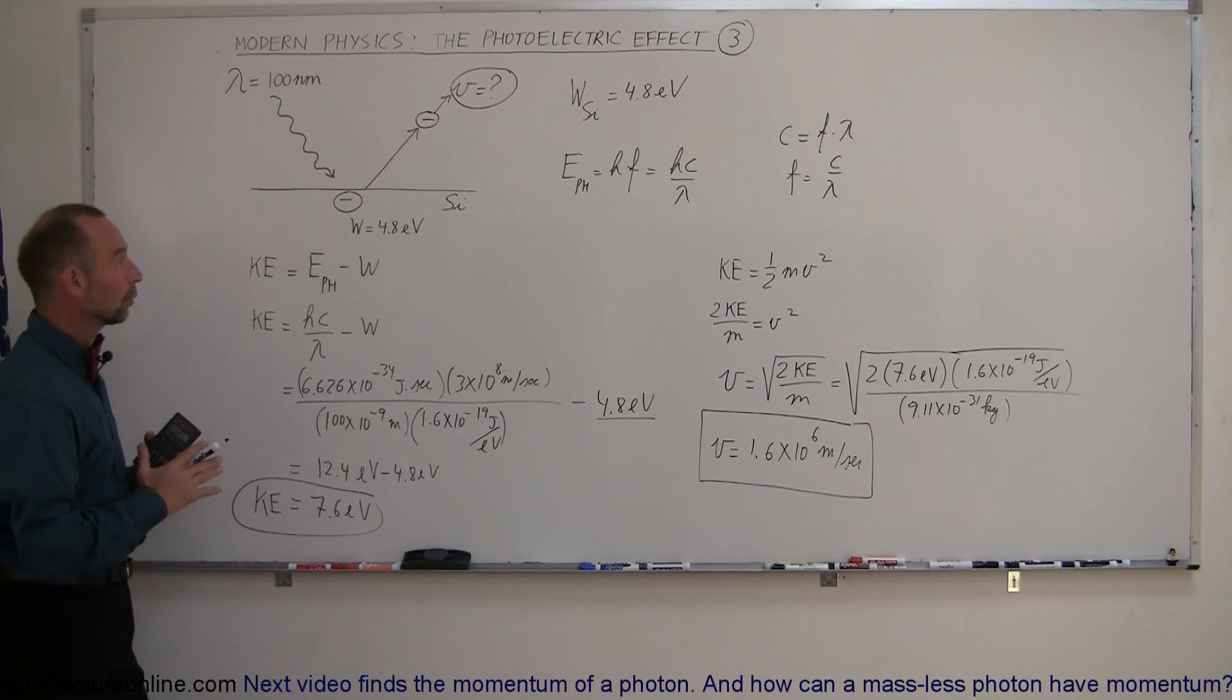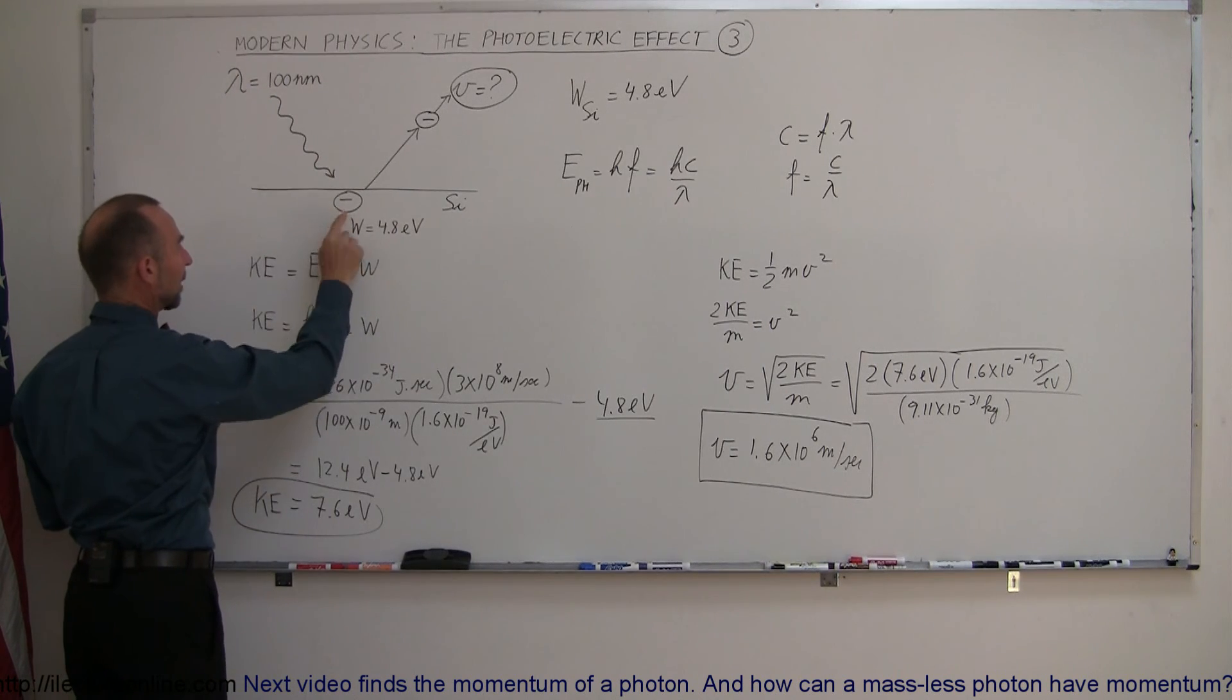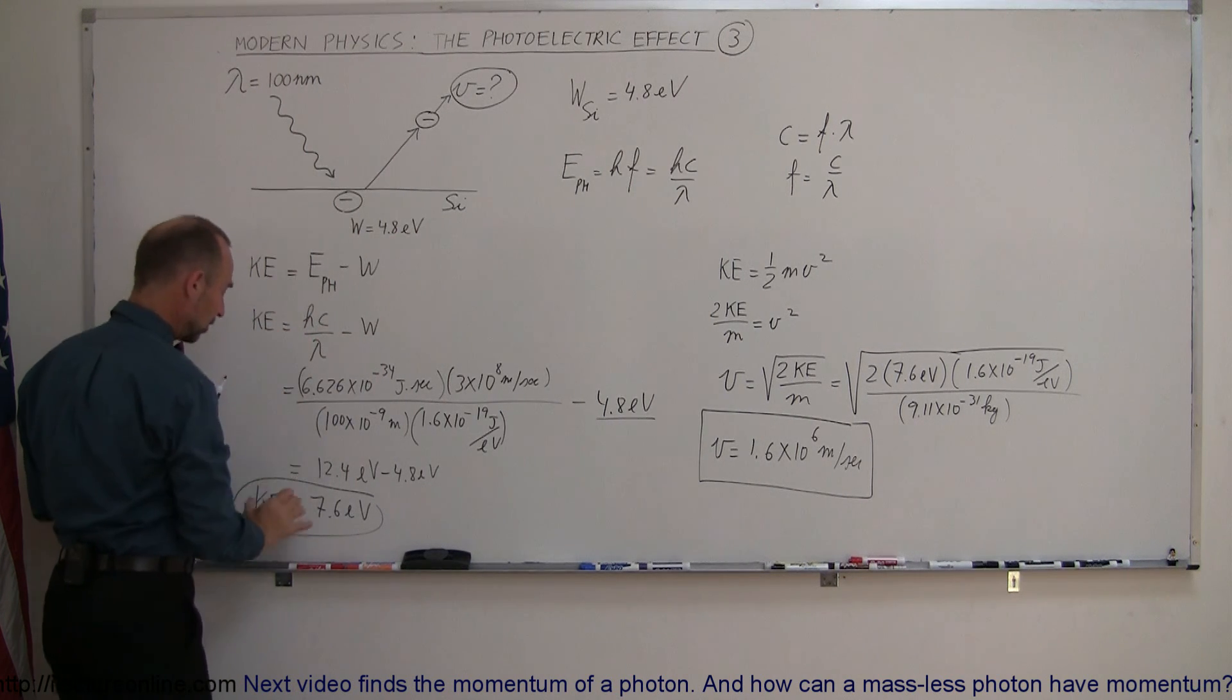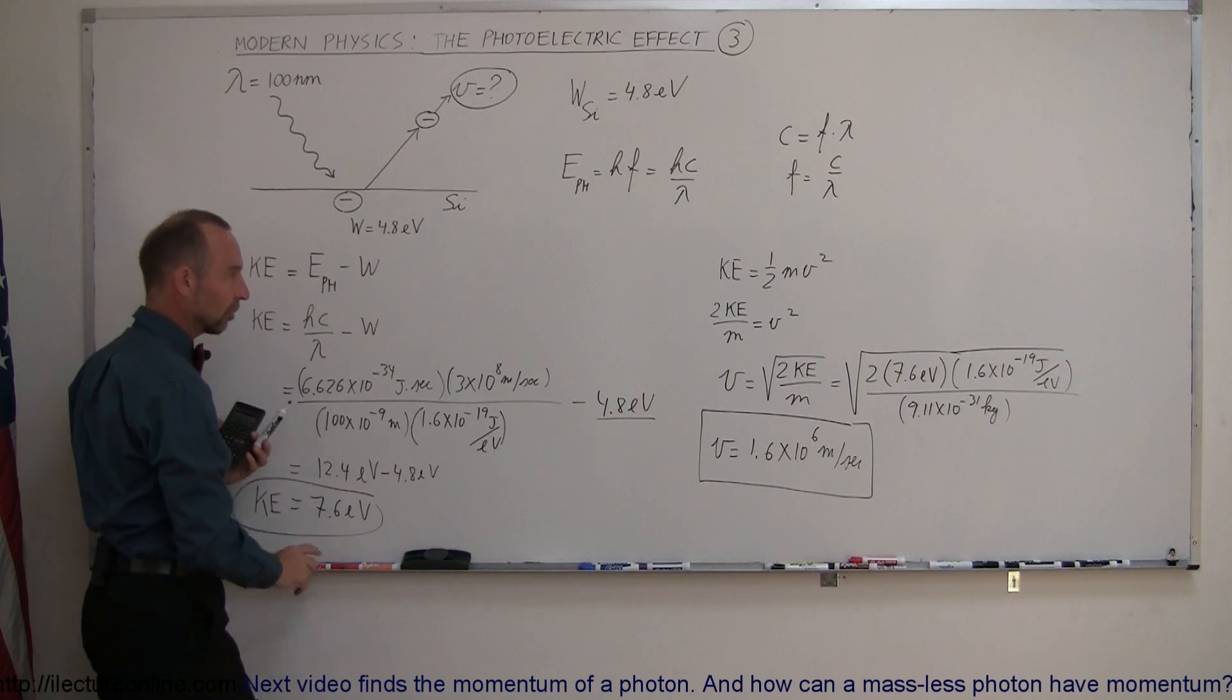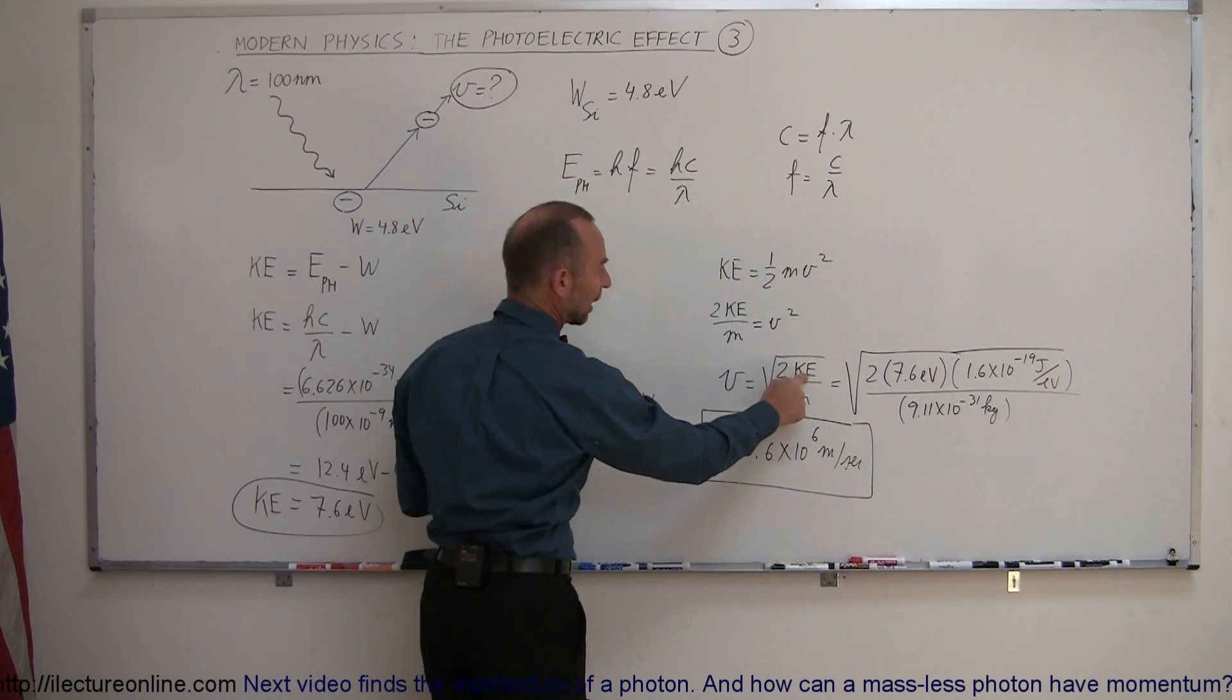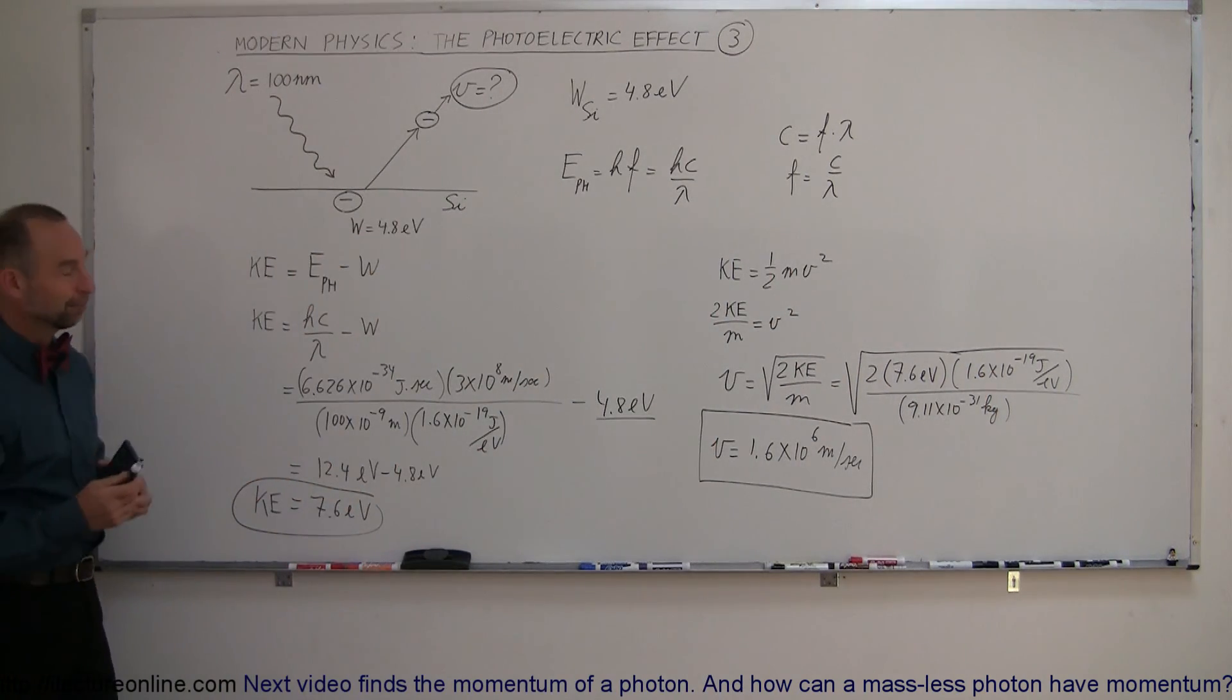Again, the way we do it is we have incoming energy from the photon. We subtract from that the work function. If this is greater than that, it will have kinetic energy. In this case, it did, 7.6 electron volts. We then use the kinetic energy equation to find the velocity. Of course, kinetic energy in electron volts has to be converted to joules. And that's how you do a problem like that.